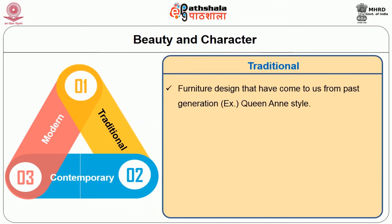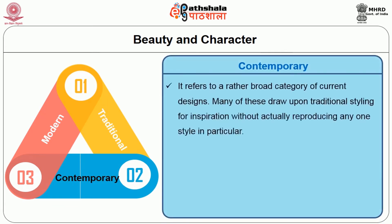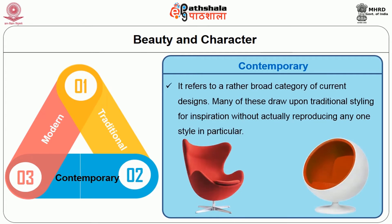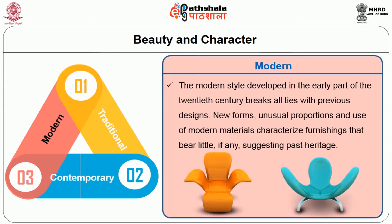Traditional furniture are furniture designs that have come to us from past generations, for example the Queen Anne style. Contemporary refers to a broad category of current designs; many of these draw upon traditional styling for inspiration without actually reproducing any one style in particular. The modern style, developed in the earlier part of the 20th century, breaks all ties with previous design — new forms, unusual proportions and use of modern materials characterize furnishings that bear little if any suggestion of past heritage.